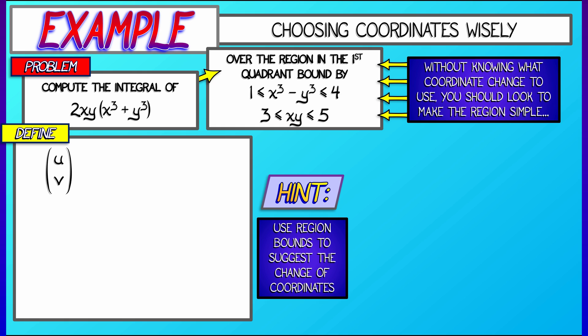We're going to transform to new coordinates, u and v, as a function of x and y, given explicitly in terms of the bounds in these inequalities. I'm going to let u be equal to x cubed minus y cubed, and v be equal to xy.